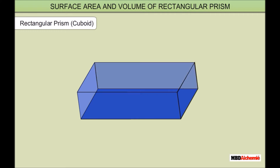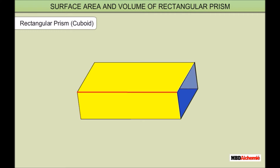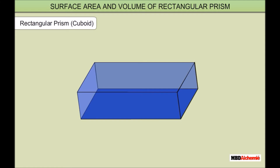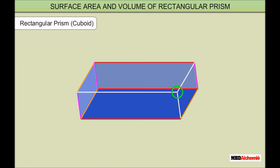The segments where two faces meet is called an edge. A rectangular prism has 12 edges. The edges intersect with each other at the vertex. A rectangular prism has 8 vertices.